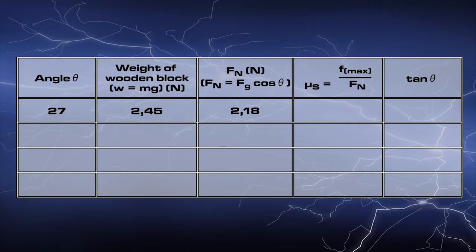Mu s is equal to the parallel component of gravitational force divided by the normal force. This is equal to 1.1 divided by 2.18 which is equal to 0.51. The value of tan is also used to calculate mu s. This is equal to tan 27 degrees which is equal to 0.51.